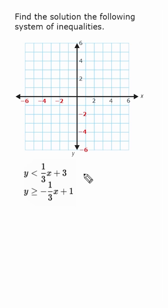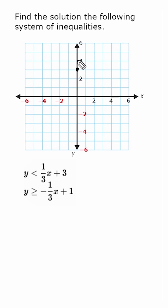Let's start with the first inequality: y is less than one-third x plus three. We start by finding the y-intercept, which is at positive three, right here. Then we use our slope of positive one-third to rise one and go over three to make another point. We can do the same again — go up one, over three — and then draw a line through these points.